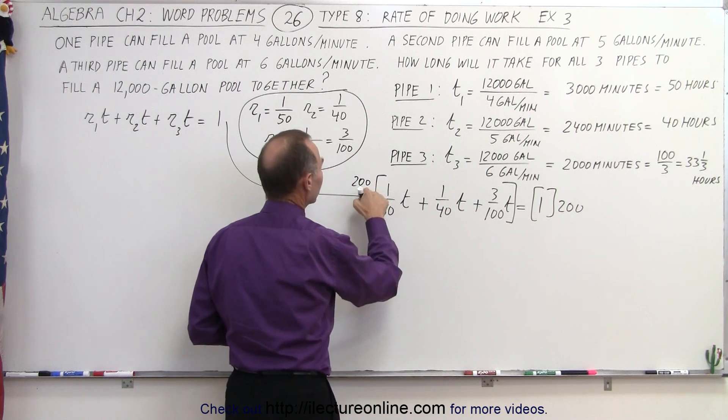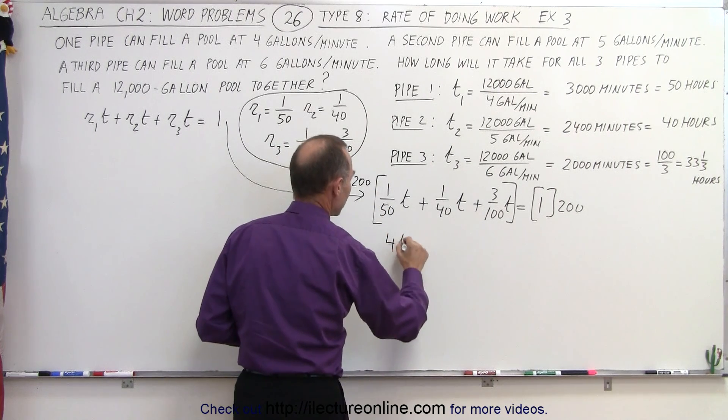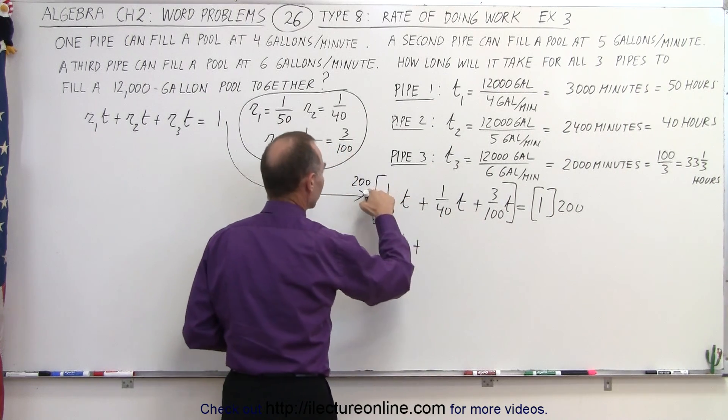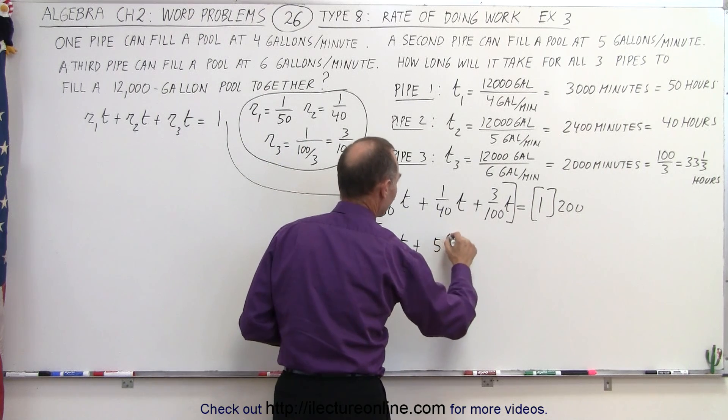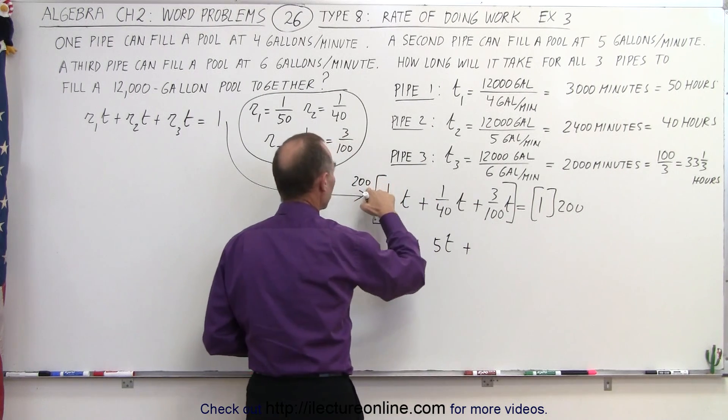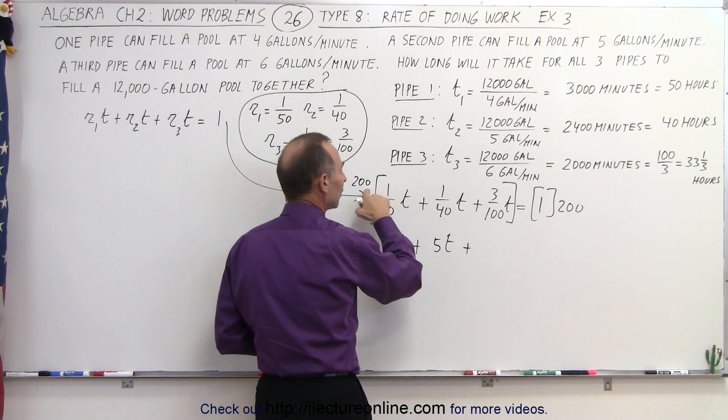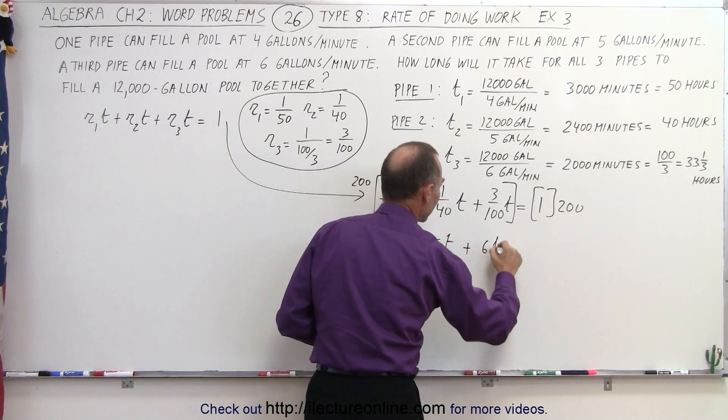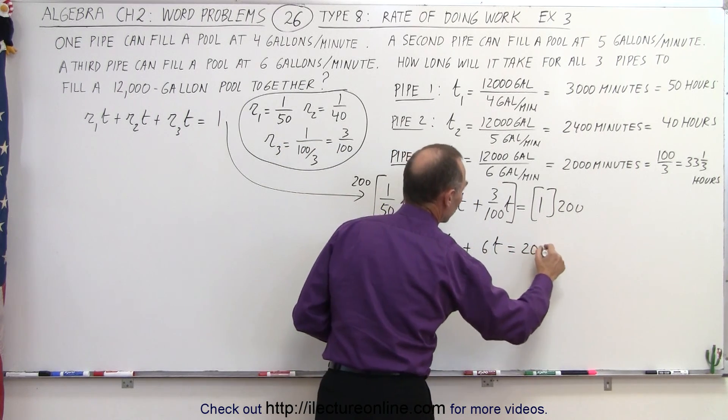50 goes into 200 4 times, so I get 4t, plus 40 goes into 200 5 times, so I get 5t. And 100 goes into 200, that would be 2 times times 3, which would be 6t, is equal to 200.